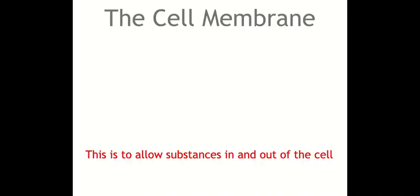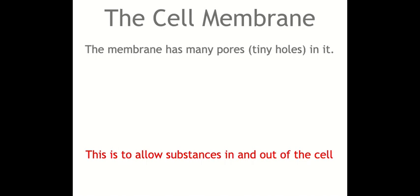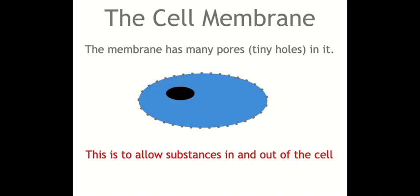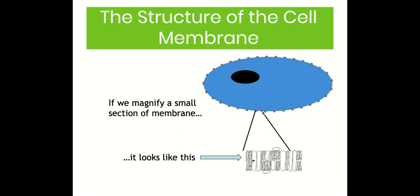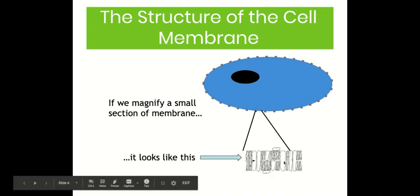We can't see the cell membrane with our naked eye, but it actually has many pores in it — tiny holes — and this relates to its function of allowing substances into and out of the cell. If we magnify or zoom in on a small section of the cell membrane, like this one here, this is what you'd be able to see — we've magnified this part of an animal cell and the membrane would look something like this.